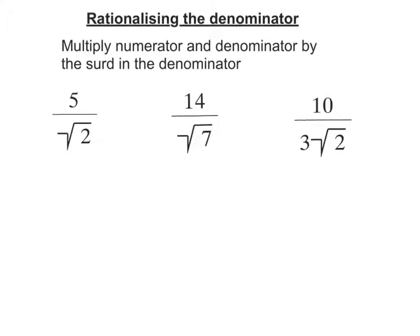In this video we're going to rationalize the denominator of these surds. To rationalize the denominator of surds, you must get a rational number, a non-surd, on the bottom. How we do that is you multiply both the top and bottom by the surd in the denominator.